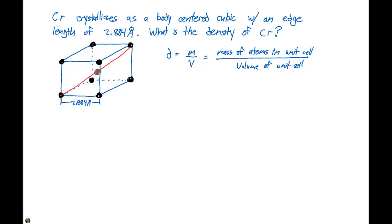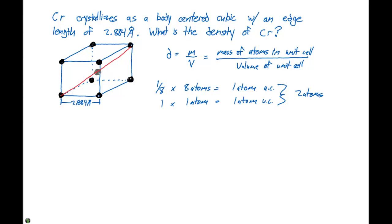Since chromium crystallizes in a body-centered unit cell, we need to figure out the mass of the atoms in the unit cell, which means figuring out how many atoms there are. We have one-eighth times eight atoms, which is one atom from the corners, plus one times one atom from the center — giving us a total of two atoms per unit cell.